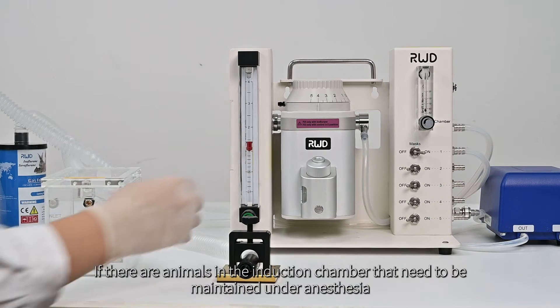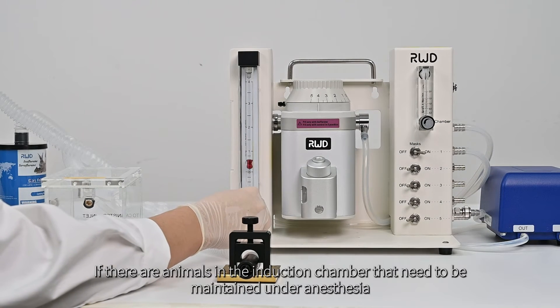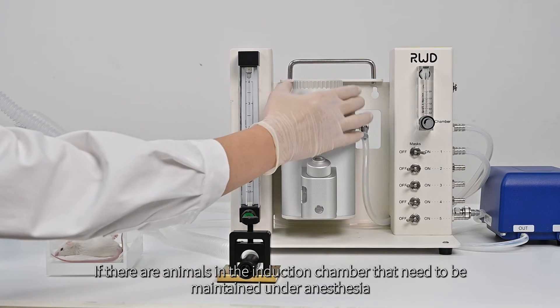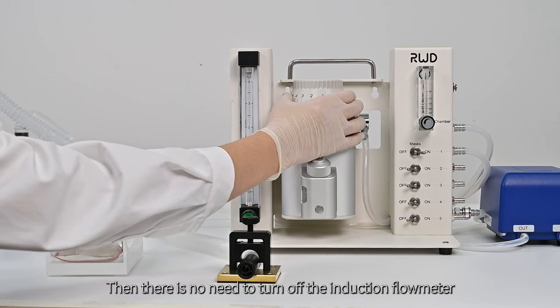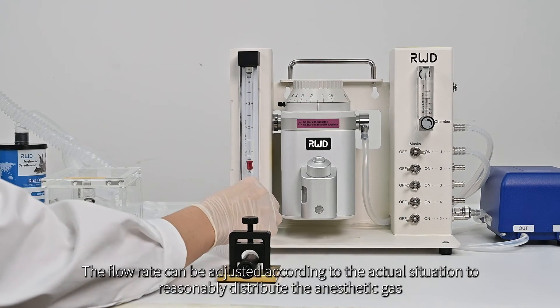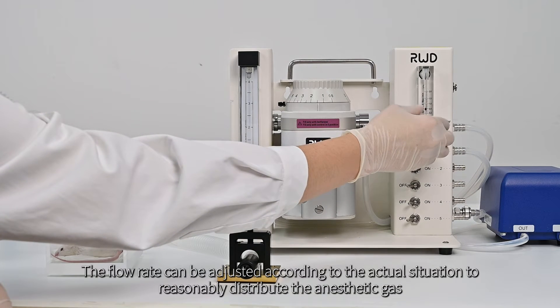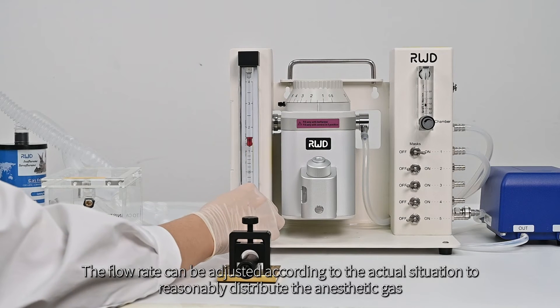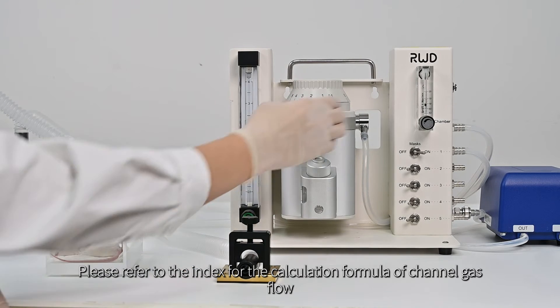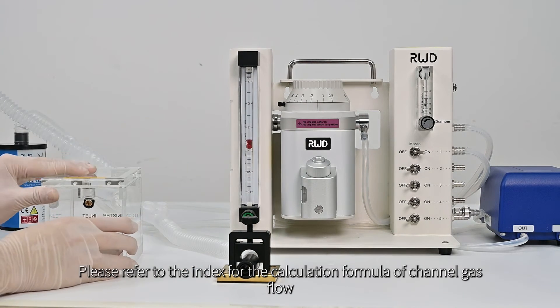If there are animals in the induction chamber that need to be maintained under anesthesia, then there is no need to turn off the induction flow meter. The flow rate can be adjusted according to the actual situation to reasonably distribute the anesthetic gas. Please refer to the index for the calculation formula of channel gas flow.